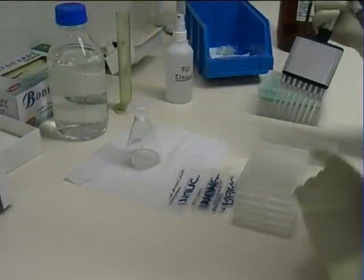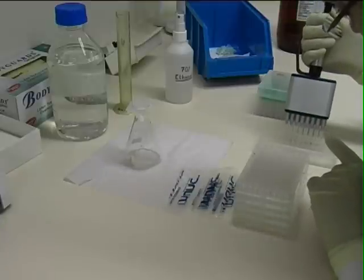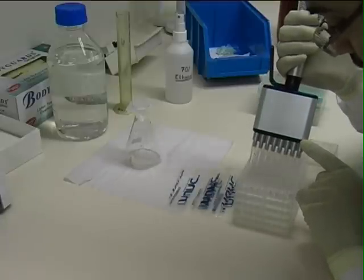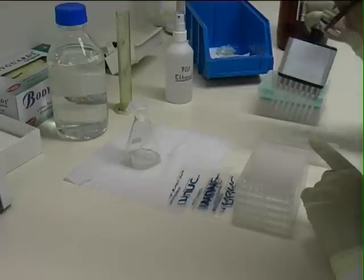Before we start the assay, it's necessary to coat some flat well plates with goat anti-mouse IgG diluted in coating buffer. We prepare the plates in bulk and keep them in the fridge for up to two weeks.